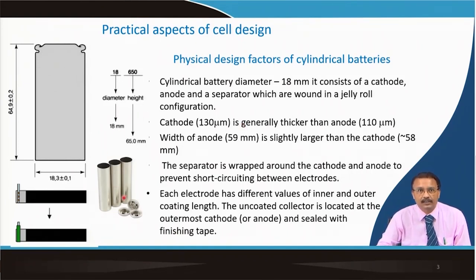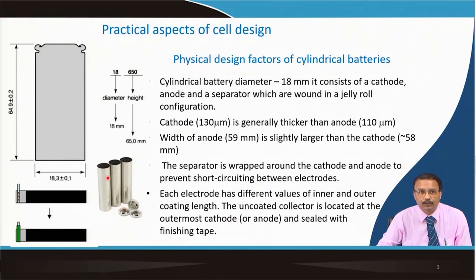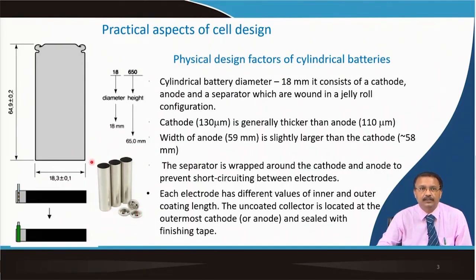When we talk about the cylindrical cell, the model that is quite important and adopted globally is the 18650. '18' stands for the diameter of the casing and '650' stands for the height, which is 65 mm. There is a gasket plus top can, and the bottom is completely sealed — hermetically sealed once you put the anode, cathode, and electrolyte inside it. There is also a vent here, so if gas formation takes place during the formation cycle or cell operation, this vent valve releases pressure.